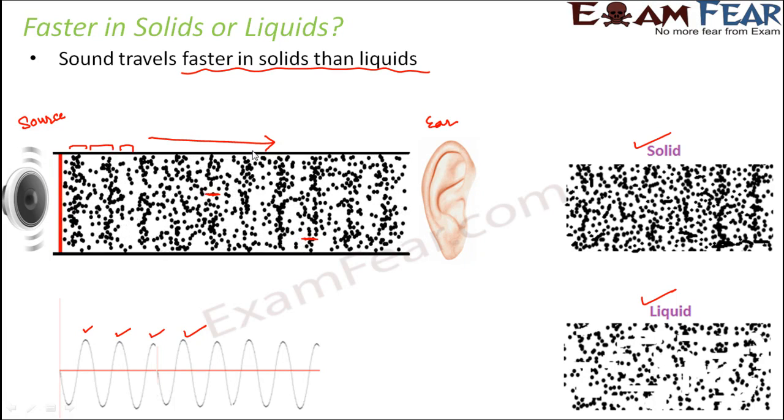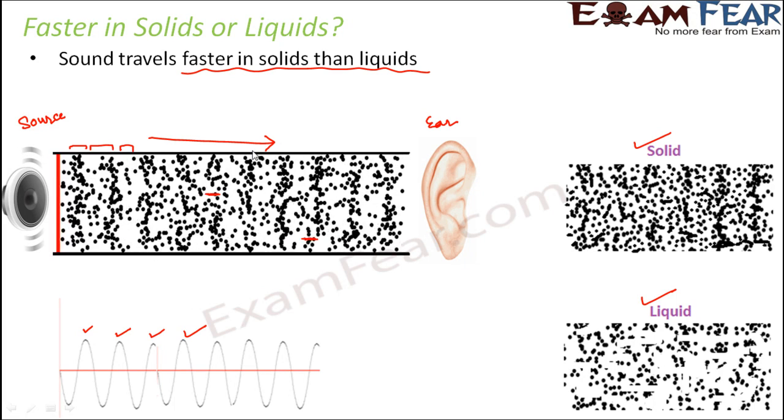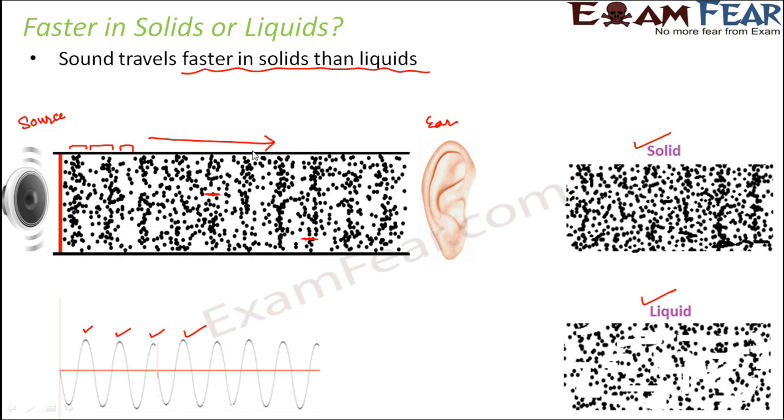Because the propagation of sound happens with the help of vibration of each particle of the medium. So if the medium is a solid, that means there are more particles present. More particles, more vibration, more transfer of energy. So faster propagation. So that is why sound travels faster in solids when compared to liquids.